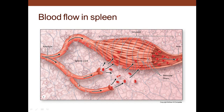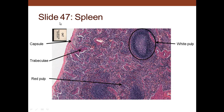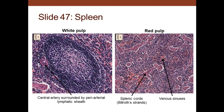The textbook illustration shows whole blood going from the penicillus arteries into the Billroth strands, where cells must migrate through the littoral cells of the sinus to return to the bloodstream. In slide 47 of the spleen, we see the capsule, trabeculae, white pulp with germinal centers, and the red pulp. The periarteriolar sheath has B and T cells, and the Billroth strands are located between the sinuses — not the trabeculae.